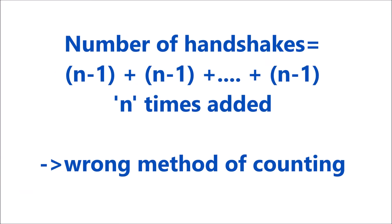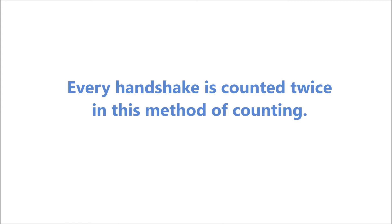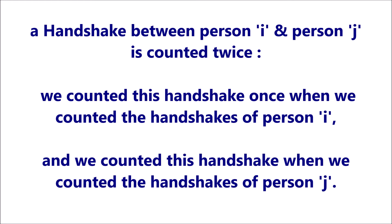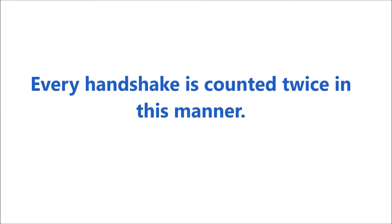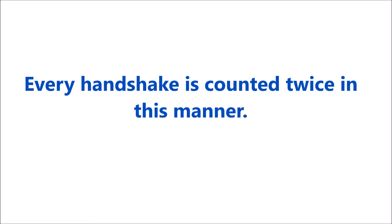Why is the total number of handshakes not n times n-1? Because when we count the total number of handshakes in that manner, every handshake is counted twice. For example, a handshake between person i and person j is one handshake, but we counted it twice — once when counting handshakes for person i, and once for person j.